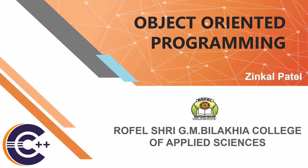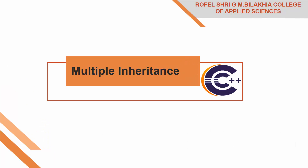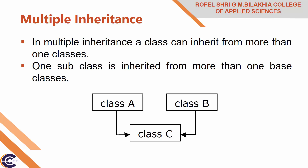Hello everyone, welcome to object-oriented programming. In this subject we had started inheritance. Today I am going to explain another type of inheritance, that is multiple inheritance. In multiple inheritance, a class can inherit from more than one class — it means there can be more than one base class and one derived class. One subclass is inherited from more than one base classes.